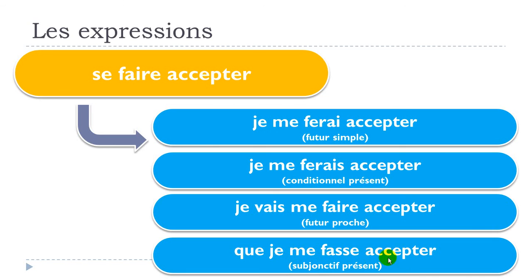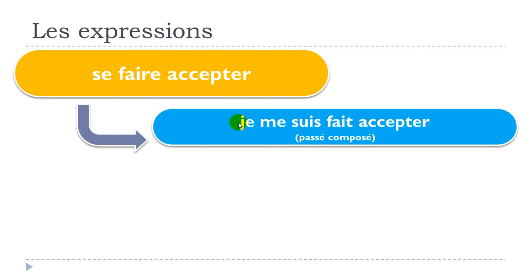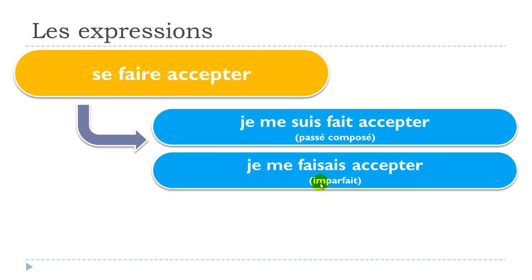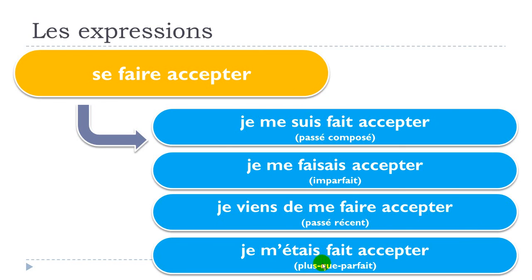Now four past tenses. Passé composé: je me suis fait accepter. Imparfait: je me faisais accepter. Passé récent: je viens de me faire accepter. Plus-que-parfait: je m'étais fait accepter.